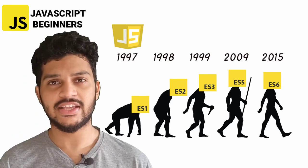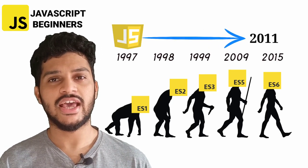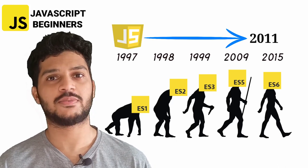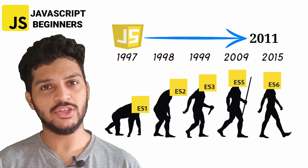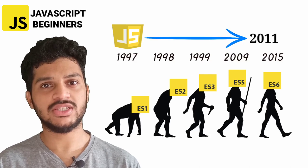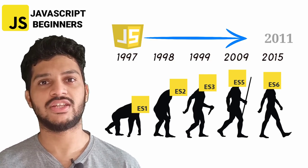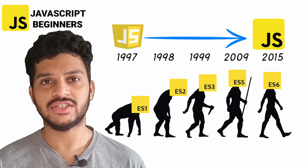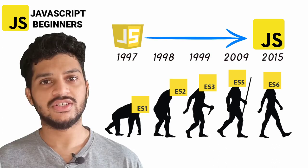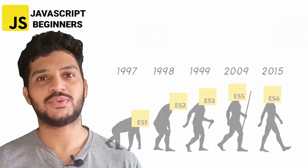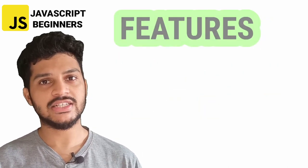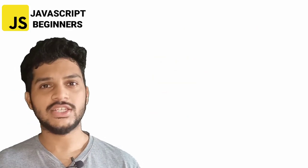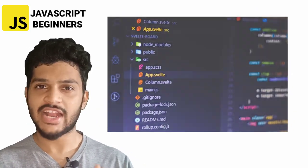From 1997 till 2011, ECMAScript has been releasing a lot of features in the progress of Javascript. The last major update was ECMAScript 2015, which is also called as ES6. There were a lot of features released in this version. Some of these features we are going to discuss in this video. We will be discussing what the let and const keyword is. Let us quickly switch back to the coding ground and have a look at it.